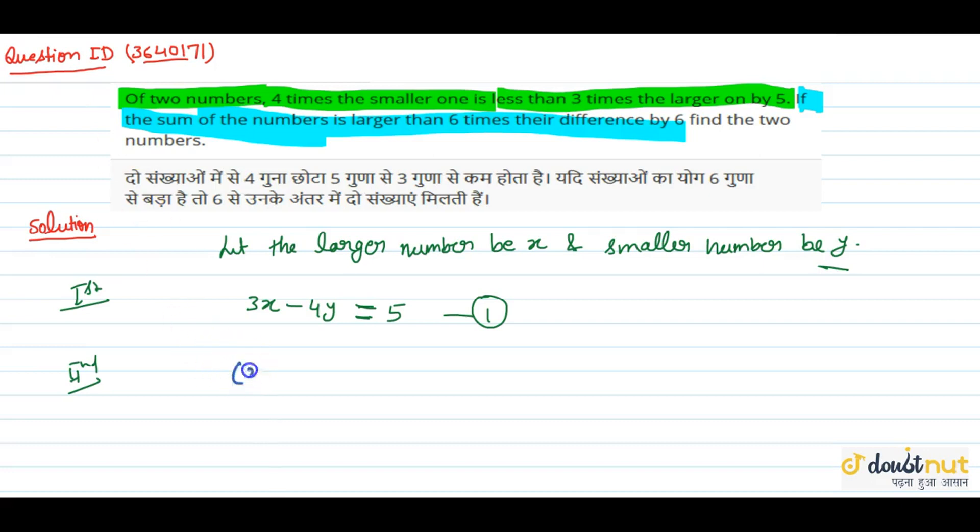The sum of the numbers is larger than 6 times their difference by 6. So 6 times the difference, if we give it to this one, we can say that x plus y equal to this part plus 6. So x plus y minus 6 times x minus y equal to 6.